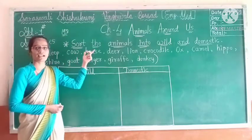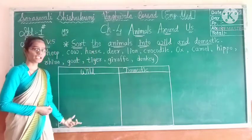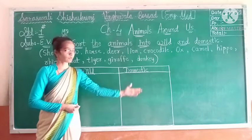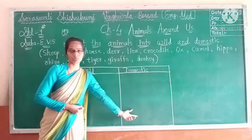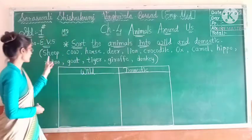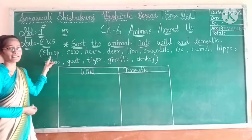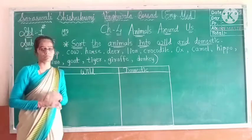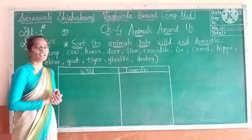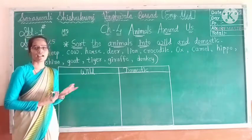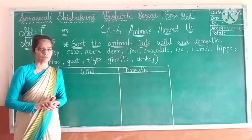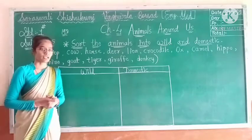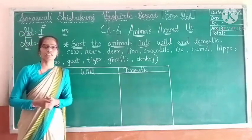From the bracket, those animals that are wild, we have to write their names under wild. And those animals that are domestic, we write their names under domestic. Domestic animals are those that we can see in our surroundings, or we can keep them in our homes or on our farms. But wild animals are those that we can see in forests.